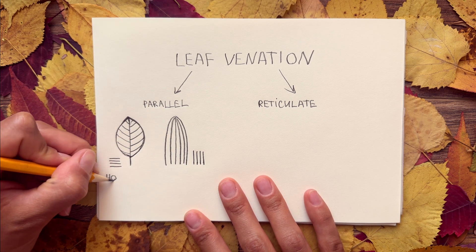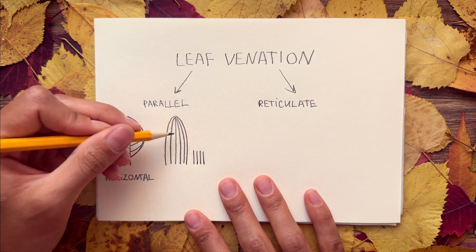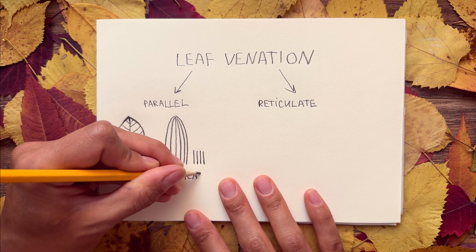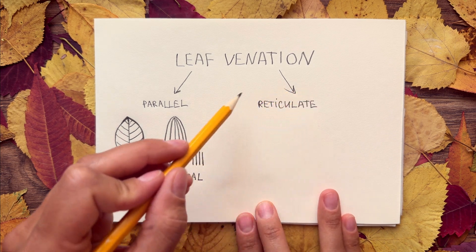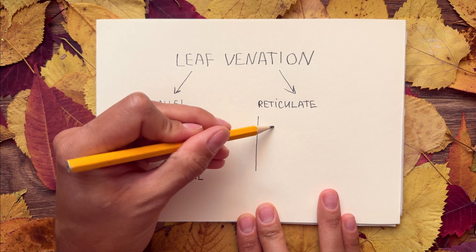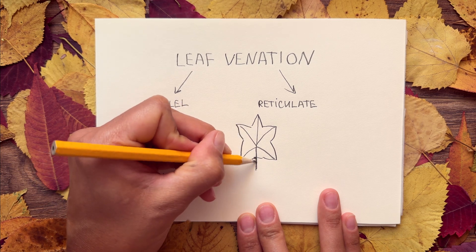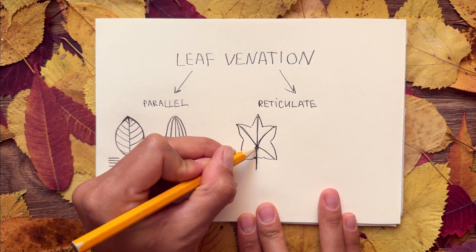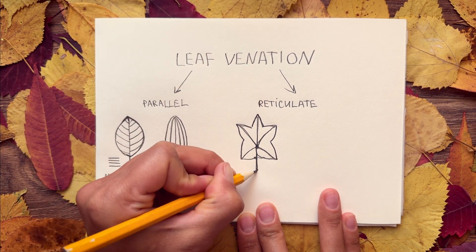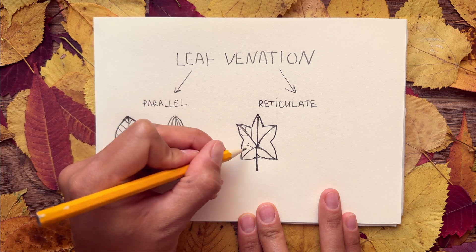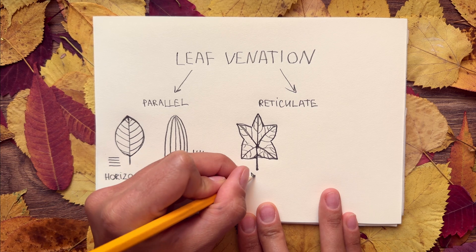To keep it simple, the first form of parallel venation is horizontal and the second is vertical. Now let's move on to the second type: reticulate venation. With reticulate leaves, one of the most typical types has all the veins spreading out from a single point, like the fingers of a hand. This type is very characteristic for maples and some other tree species. It's called palmate — from the word 'palm', like the palm of a hand.